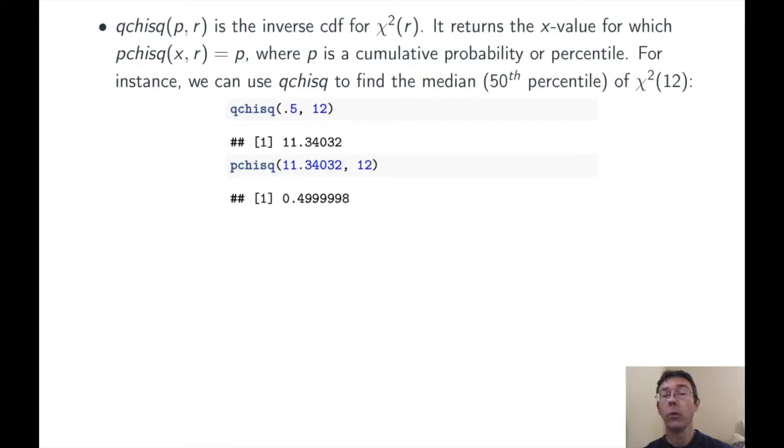For instance, if we wanted to find the 50th percentile, the median, of chi-squared of 12, we would use the command qchisq of 0.5 comma 12. The first argument is the percentage that we're interested in, and the second is the number of degrees of freedom.